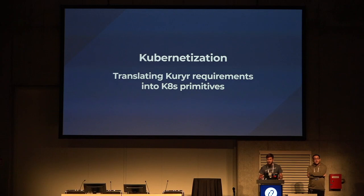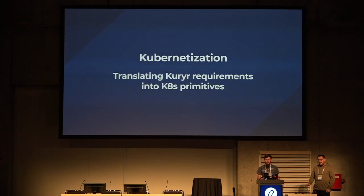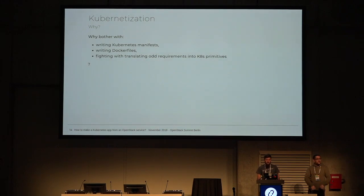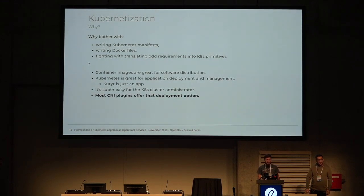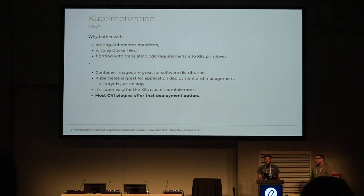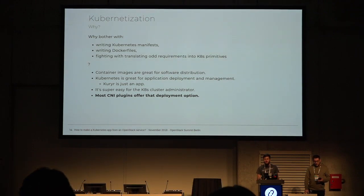You should now have the basic image of how this application works. I'll show you what requirements are there and how we translate that into Kubernetes resources. Why do we want to write the Kubernetes manifests, write the Dockerfiles, and find the translation of the requirements? Basically, it's about installation, distribution, and manageability. But last but not least, most of the CNI plugins offer that, so we simply want to use the same way of distributing the software.